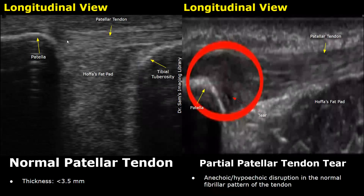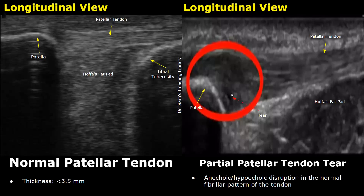In this image we can see a partial patellar tendon tear at this location. You can see the disruption in the normal fibrillar pattern — this is a partial tear.